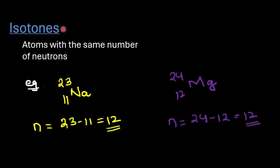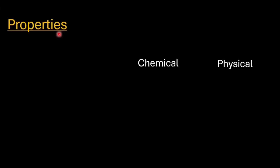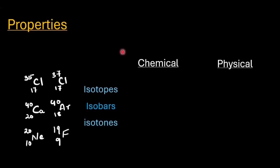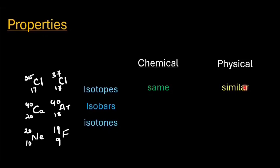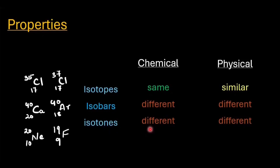Let's look at the chemical and physical properties of isotopes, isobars, and isotones. The chemical properties are determined by the electronic configuration. Since isotopes have the same number of electrons, they share the same electronic configuration and therefore their chemical properties are exactly the same. Their physical properties are similar but differ slightly due to their slightly differing atomic masses. However, in case of isobars and isotones, since they have completely different electronic configurations, their chemical as well as physical properties are entirely different.